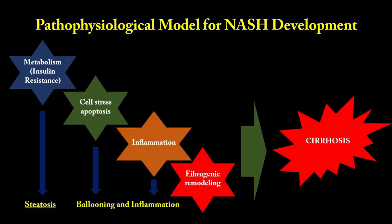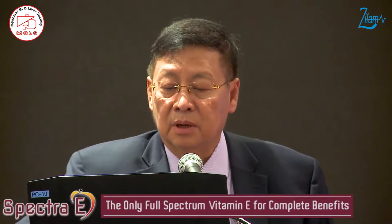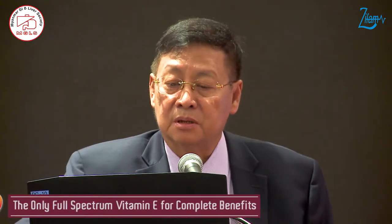This is a pathophysiological model for NASH development. Metabolism, insulin resistance, cell stress, apoptosis, inflammation, and fibrogenic remodeling, leading to cirrhosis of the liver. This is a simplification of the pathophysiological model for NAFLD.